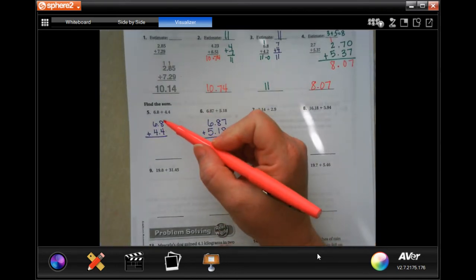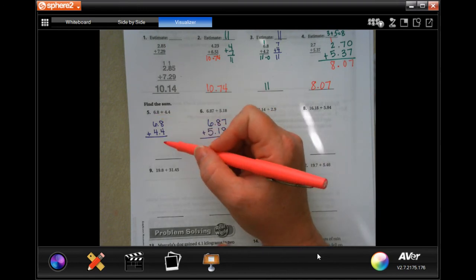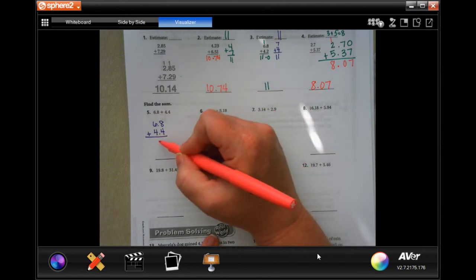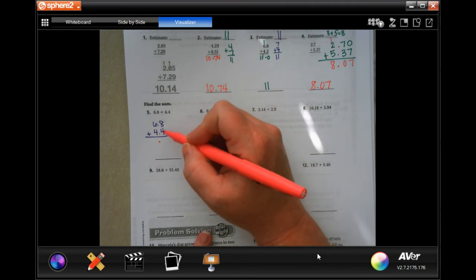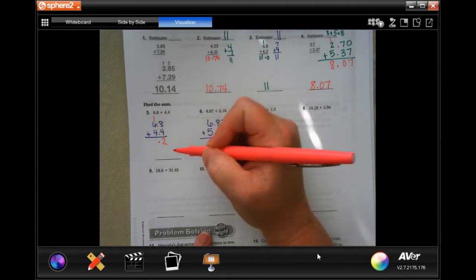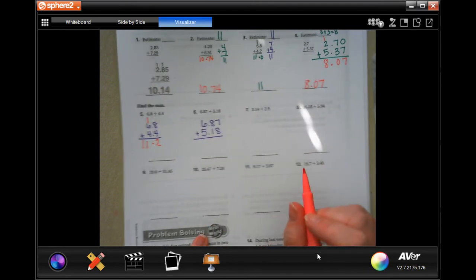All right, guys. I rewrote these. We don't have to estimate anymore, but I rewrote these so that they're on top of each other so that it's a little bit easier for us to add. So first, drop your decimal. Then you can just add. 8 plus 4 is 12, 2 down, carry the 1. 1 plus 6 is 7, plus 4 is 11. 11.2.